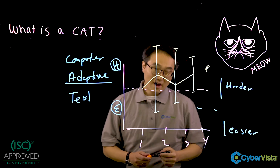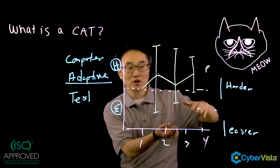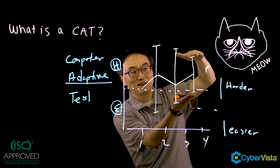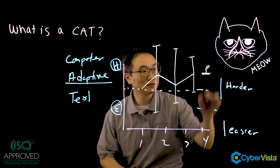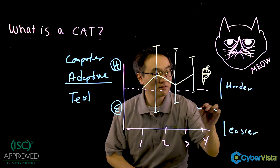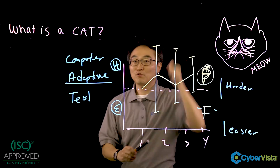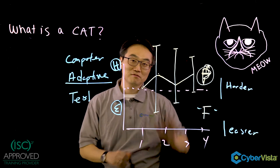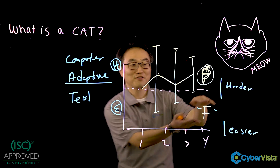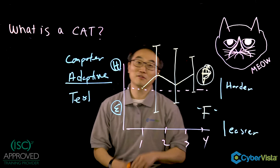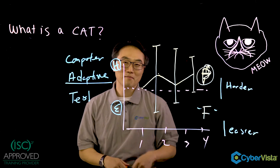After a certain number of questions in any CAT, if the computer is sure that this confidence index falls within the passing level — this is passing, this is failing — if you get in that level, it will say you passed the test. Celebrate. If the confidence level is hanging out in the failing zone, then it will immediately stop and say you didn't do a good enough job. Come back next time.